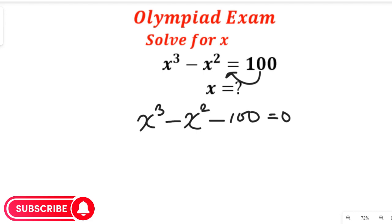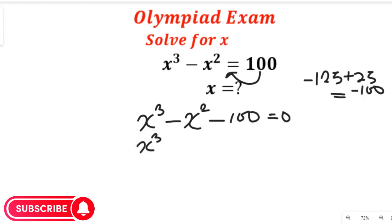Now we're going to simplify this by using 125. Negative 125 plus positive 25 will give us negative 100, so we're going to replace -100 with that. We'll have x to the power of 3 minus x to the power of 2 minus 125 plus 25, and this will be equal to zero.